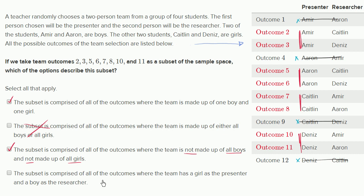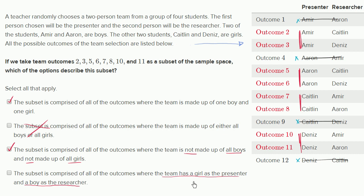The last option says the subset is comprised of all the outcomes where the team has a girl as a presenter and a boy as a researcher. That's true for outcomes 7, 8, 10, and 11, but it is not true for outcomes 2, 3, 5, and 6 — in those outcomes, you have a boy as the presenter and a girl as a researcher. So what they've described here is only a subset of the subset we're talking about. The full subset includes both that and the scenarios where a boy is the presenter and a girl is the researcher. So the correct answers are the first and third options.